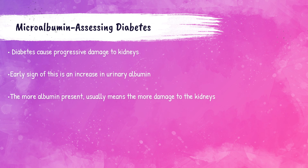Diabetic patients with poor glucose control have a high risk of kidney damage due to glucose concentration in the urine. This progressive damage is often slow to develop. The first sign of diabetic nephropathy is an increased level of urinary albumin. A microalbumin test detects these increases of albumin in the urine and is usually ordered annually to monitor patients with diabetes. The more albumin present in the urine, the more kidney damage.